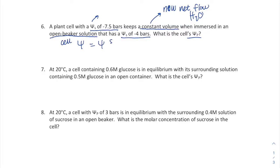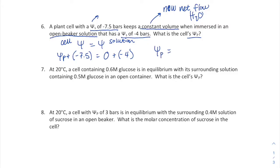When there's no net flow, water potentials are equal. Setting the cell's water potential equal to the solution's: pressure potential plus negative 7.5 bars equals zero plus negative 4. Solving for the pressure potential gives 3.5 bars.